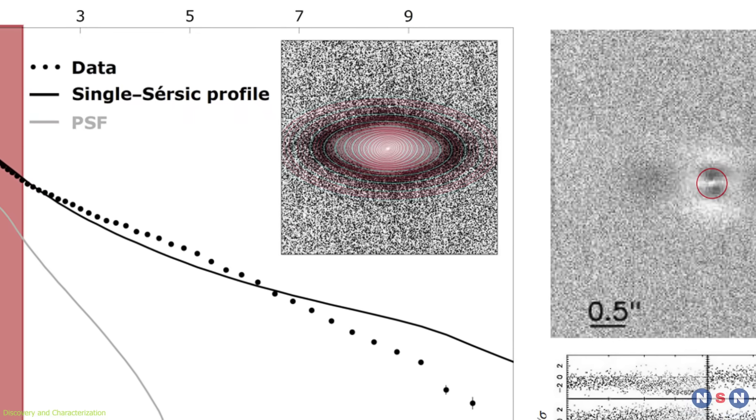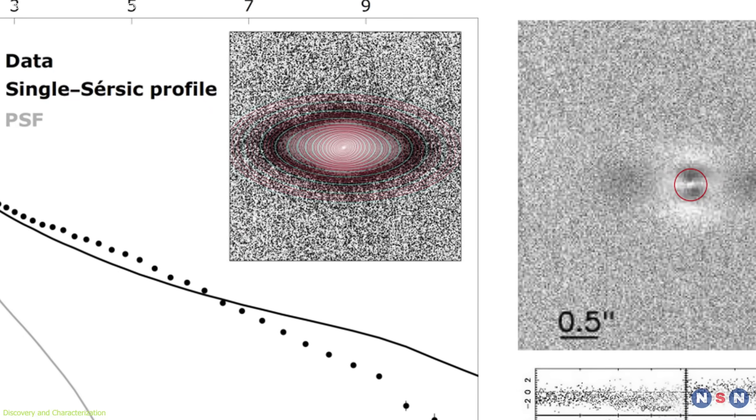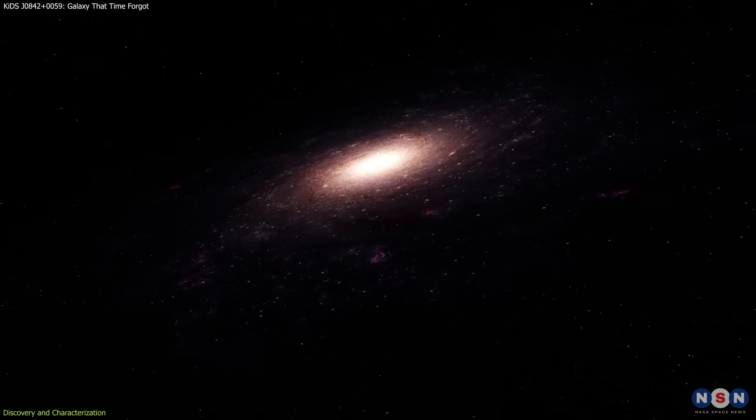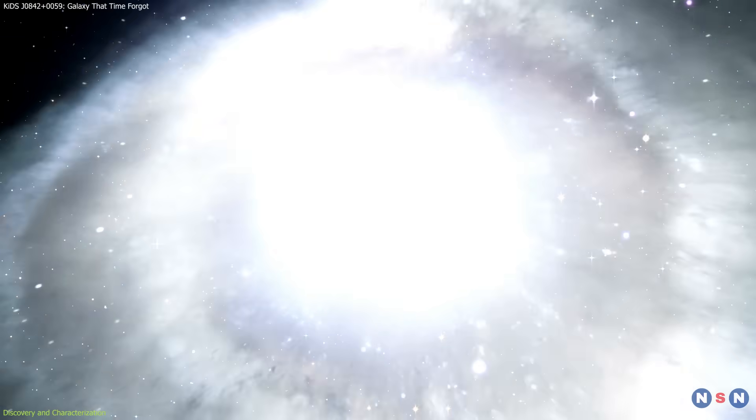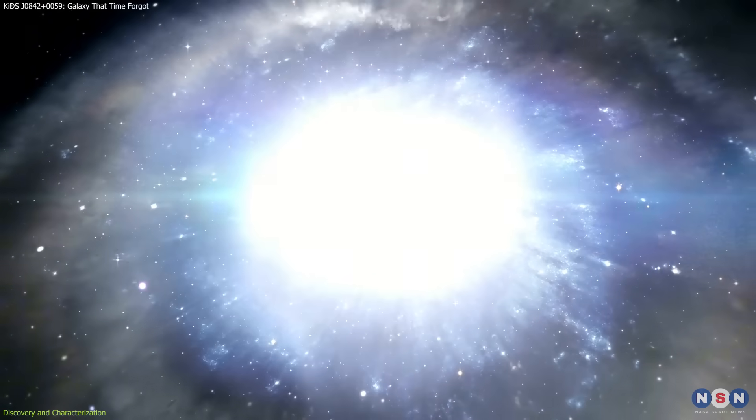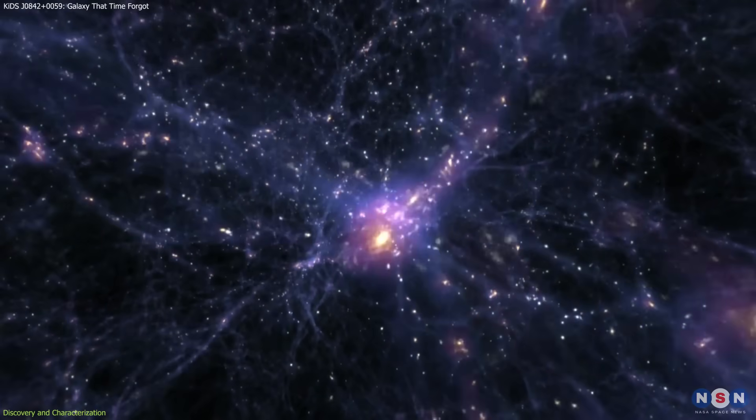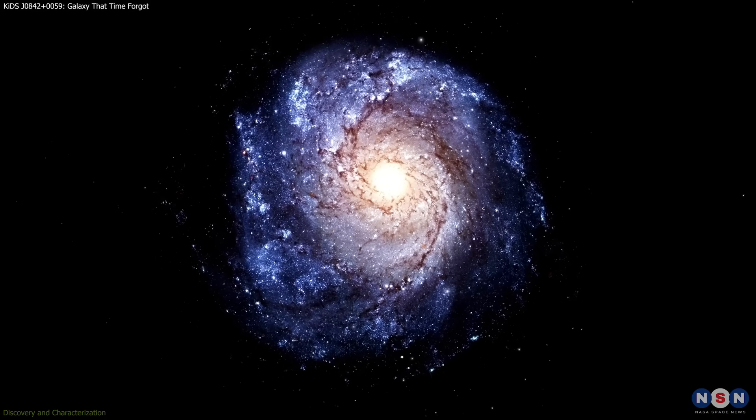This discovery confirms that not all massive galaxies follow the same growth path. Some, like a fossil galaxy, appear to have taken a faster, more isolated route, forming early, burning through their gas, and then remaining frozen in time.